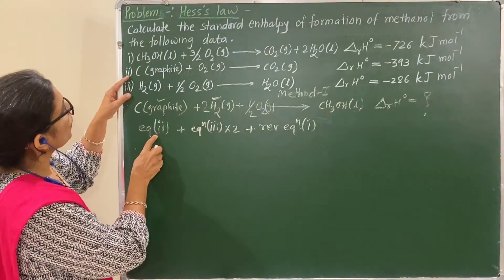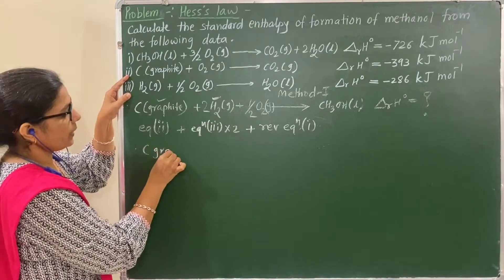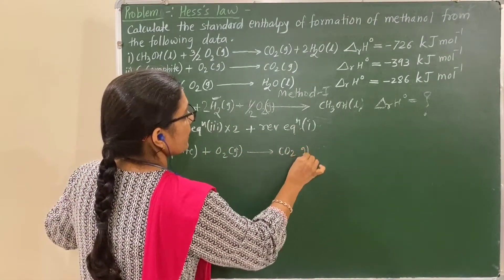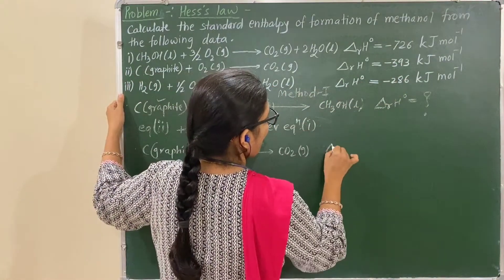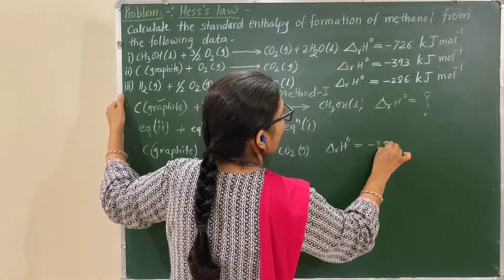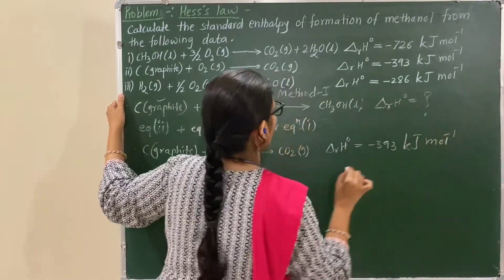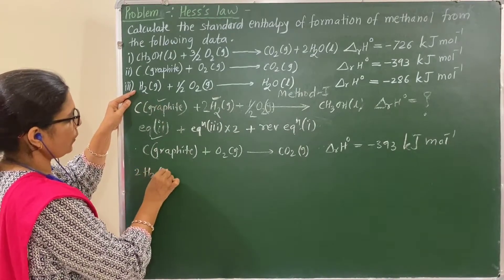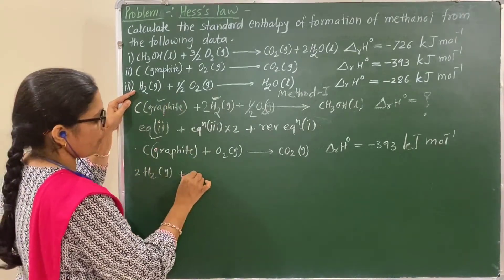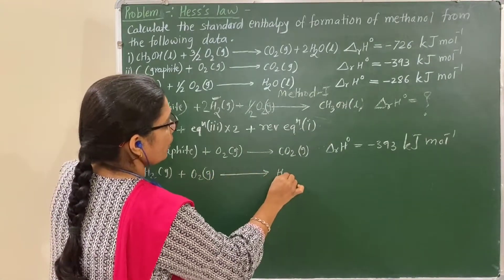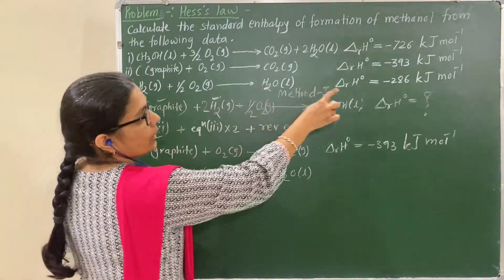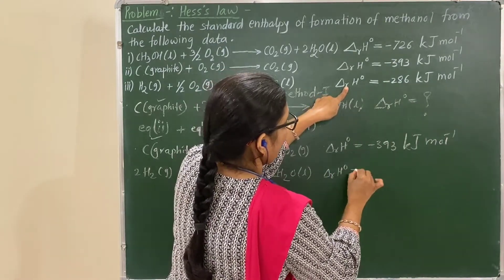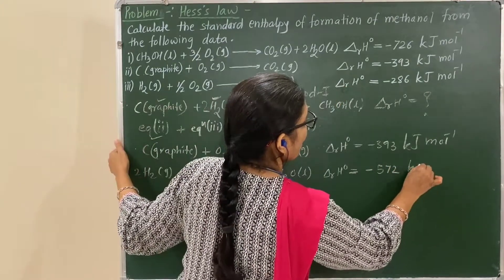Equation number 2: carbon (graphite) + O₂ gas → CO₂ gas. Its enthalpy change is −393 kJ/mol. Equation number 3 multiplied by 2: 2H₂ gas + O₂ gas → 2H₂O liquid. The enthalpy is −286 × 2, therefore −572 kJ/mol.